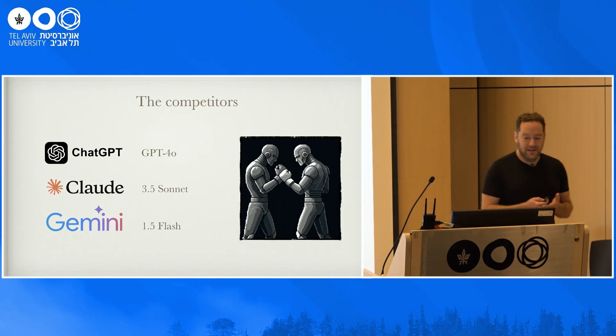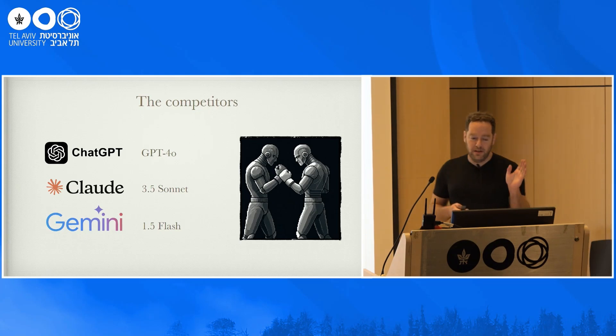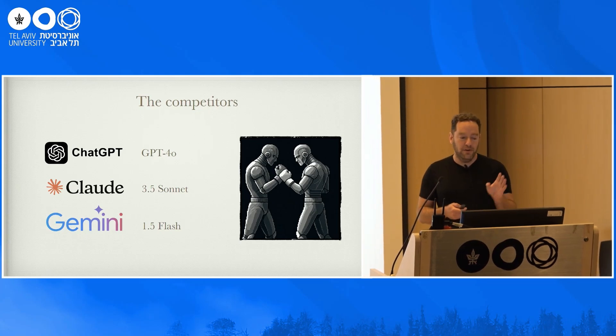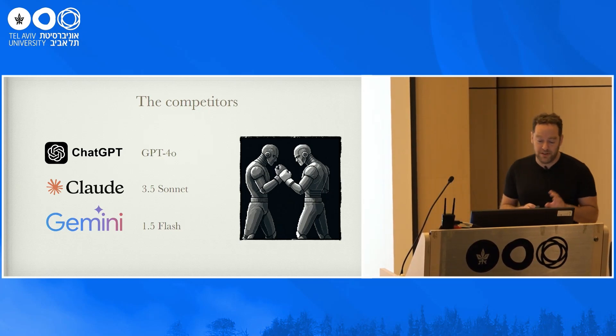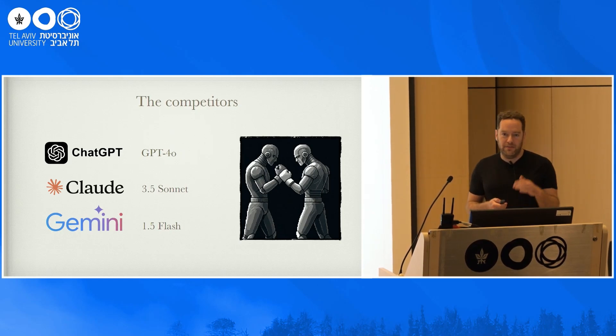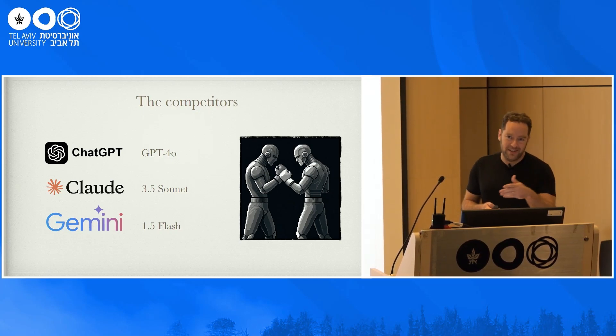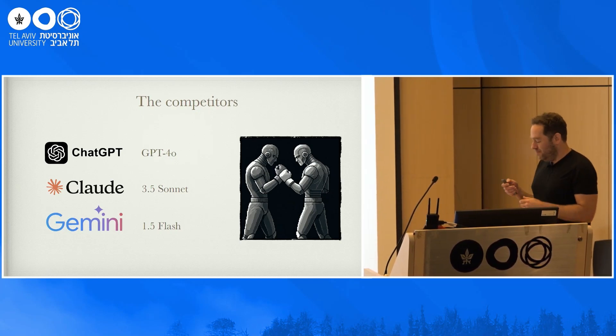So here are the systems we're going to compare. ChatGPT, the current model GPT-4.0, Claude 3.5 Sonnet, and Gemini 1.5 Flash. These are all the three tiers of kind of leading LLMs. So if you pay money, you can get maybe a better model, you can get better results. So let's see.